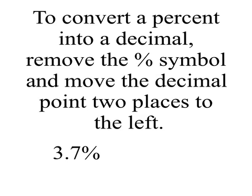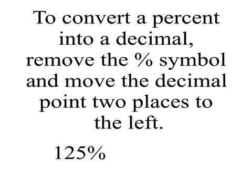And there's 3.7%. Move the decimal two to the left. We need to add a zero for the extra place, and then we remove the percent symbol, and we get .037 — the decimal representation of 3.7%. Here's another: 125%. We know where the decimal is, we move it over, and we get 1.25.